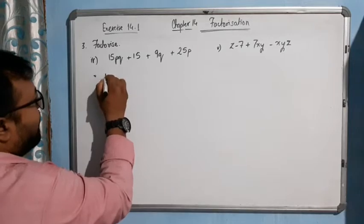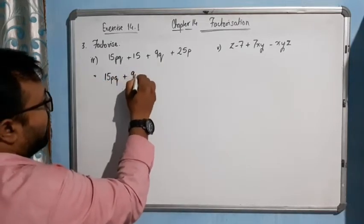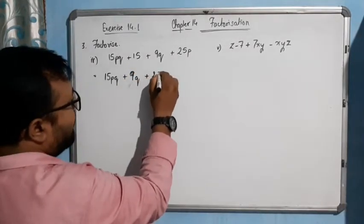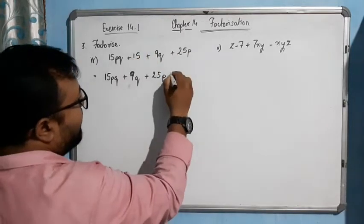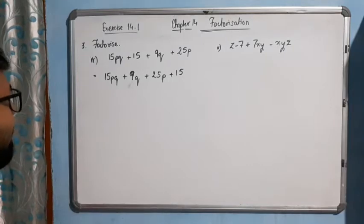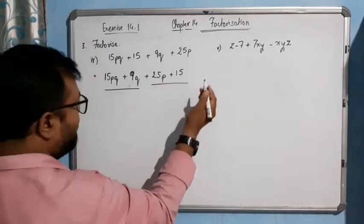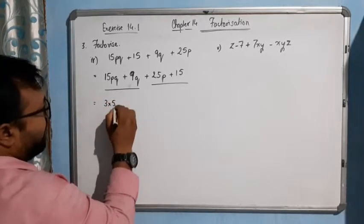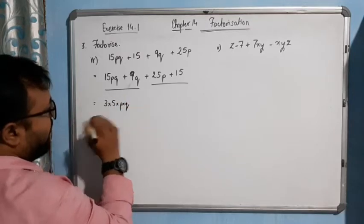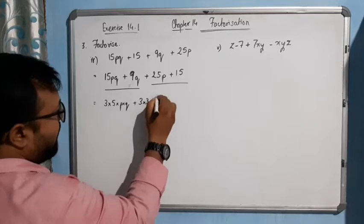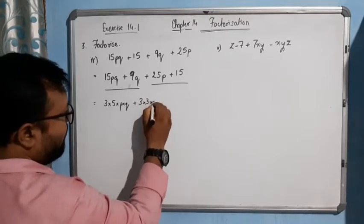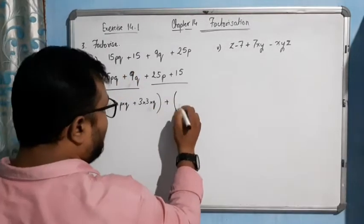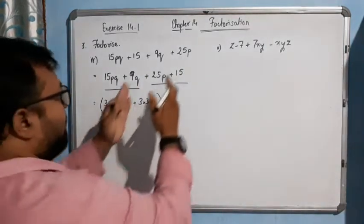So directly I am writing: 15PQ, then let me bring 9Q here, so 15PQ plus 9Q, then plus 25P, then I will shift 15 at the end. Now from these two terms, let me show you something: 3 into 5 into P into Q, plus 3 into 3 into Q. I will keep this inside a bracket because I will take common from these two terms. Now plus sign is there, and from the remaining two terms I will take common from this bracket as well.